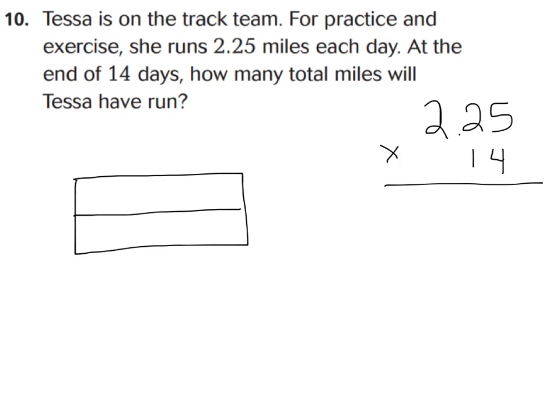I'm going to walk you through using the box method on this one, and then we can check it with traditional. We need to break up our place values. Let's start with 14: I'll put a 10 and a 4. Then we break up 2 and 25 hundredths into all its place values: we'll put 2 above, then 2 tenths, and then 5 hundredths. So those are all my place values, giving us 6 partial products.